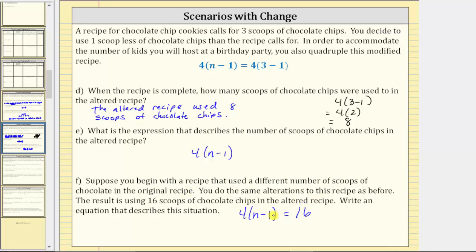If we take it one step further and wanted to determine the number of scoops in the new original recipe, we can recognize that four times four equals 16. So n minus one must equal four, which means n equals five. The new original recipe, in this case, would have required five scoops of chocolate chips to begin with. I hope you found this helpful.